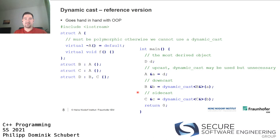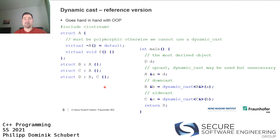That is a lot to take in. Maybe a good way to put it: you can ignore information. If you have the most concrete thing, you can create references of more abstract types higher in the hierarchy, which just ignores more concrete information that may have been added in more concrete types.